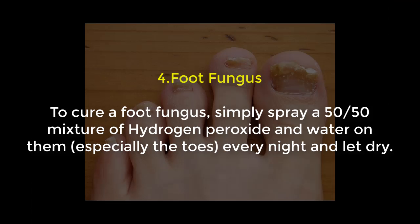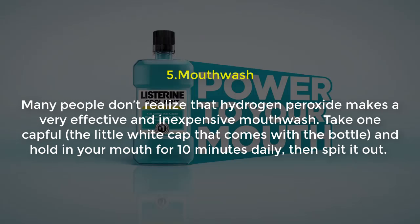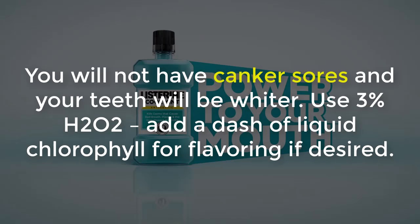Number four: foot fungus. To cure a foot fungus, simply spray a 50/50 mixture of hydrogen peroxide and water on the affected area, especially between the toes, every night and let dry. Number five: mouthwash. Many people do not realize that hydrogen peroxide makes a very effective and inexpensive mouthwash. Take one cupful — the little white cup that comes with the bottle — and hold it in your mouth for 10 minutes daily, then spit it out.